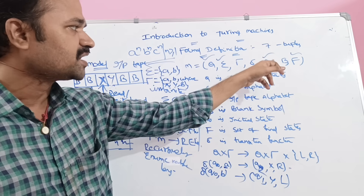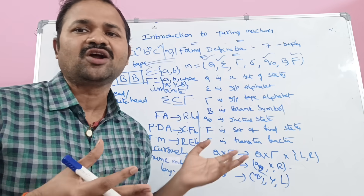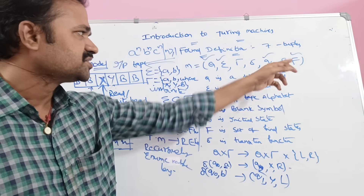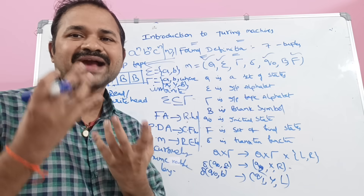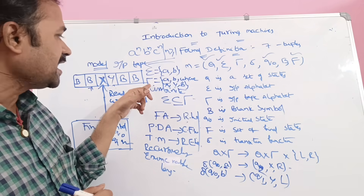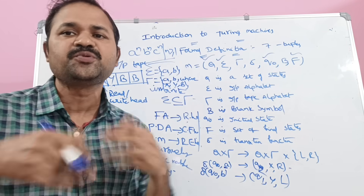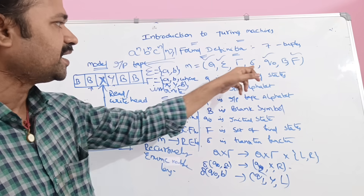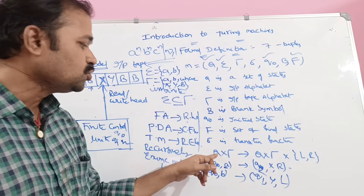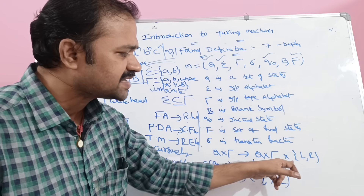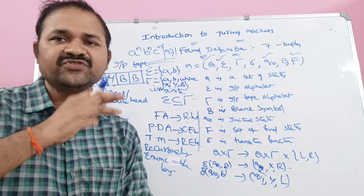Q₀ means the initial state, and F means the set of final states — there may be multiple final states. B stands for the blank symbol, which is part of the tape alphabet τ. Next we have δ, the transition function, which maps from Q × τ to Q × τ × {L, R}, where L means moving in the left direction and R means moving in the right direction.